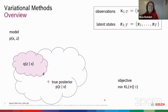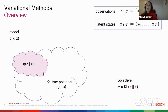Variational Dynamic Mixtures are a type of variational method. To define a variational method, we first define a model of how the data and the latent variables are related to each other. Then, because inferring the true posterior is intractable, we define a variational family — a class of variational distributions. Through optimizing the ELBO, we find the member of the class closest to the true posterior. I will first talk about the model, then about the variational family used for VDM, and later mention something about the ELBO.